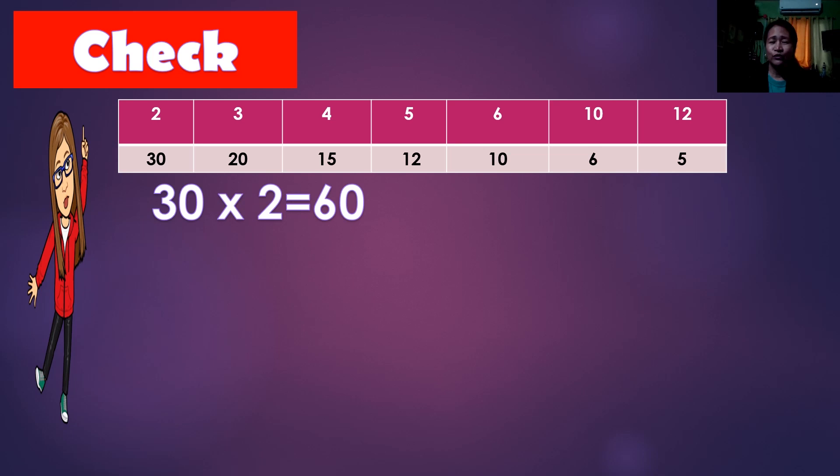So we have 30 times 2. 30 times 2 is 60. Okay, correct? Then 20, or 20 times 3.